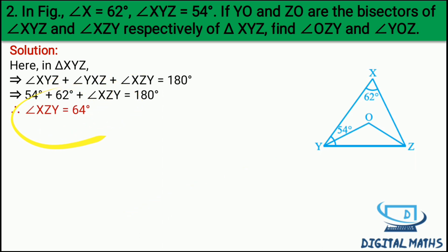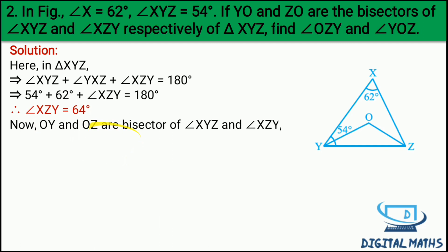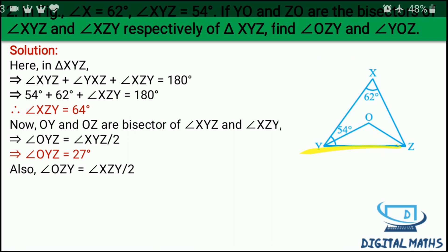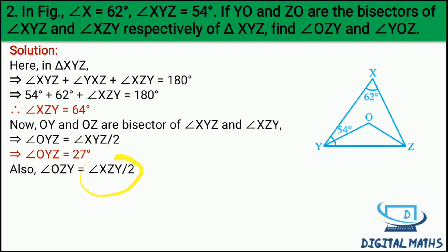Angle XYZ + angle YXZ + angle XZY = 180 degree. XYZ = 54, YXZ = 62, so angle XZY = 180 minus 54 minus 62 = 64 degree. Ab OY and OZ bisectors hain of angle XYZ and XZY, so: angle OYZ = XYZ/2 = 54/2 = 27 degree. Aur angle OZY = XZY/2 = 64/2 = 32 degree.